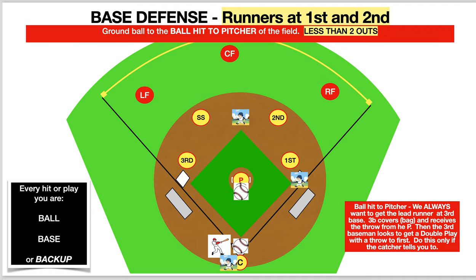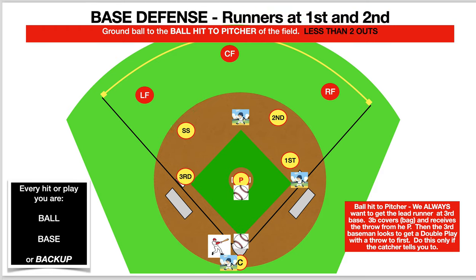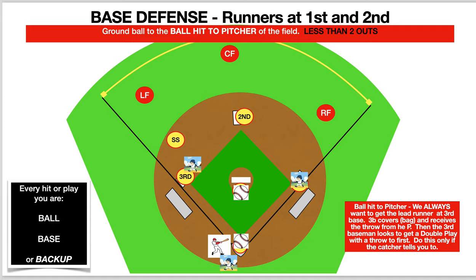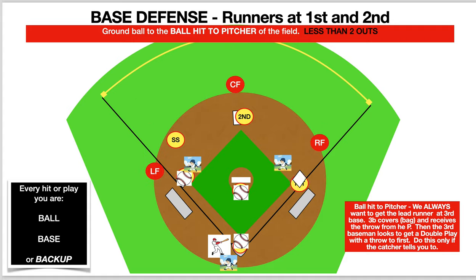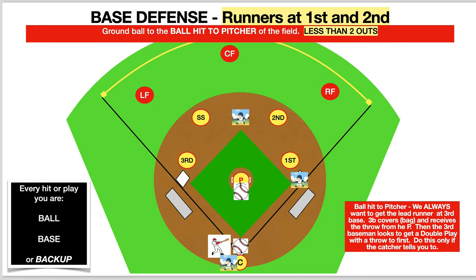Let's take one more look. The pitch comes in, the hit goes to the pitcher. Third covers bag. Shortstop's backing up. Second and first are on bag. Catcher's on bag. Pitcher fields the ball. Right fielder, center fielder, and left fielder are backup. We throw the runner out at third and look to see if we can double him off at second.